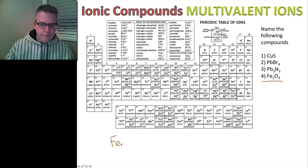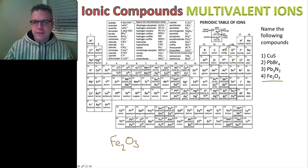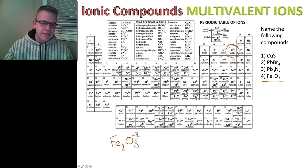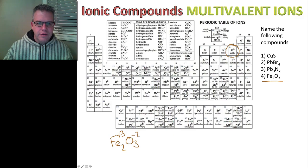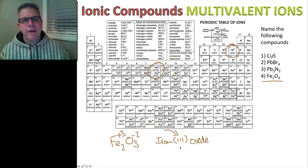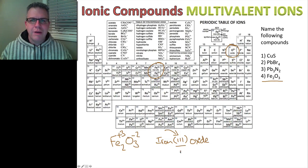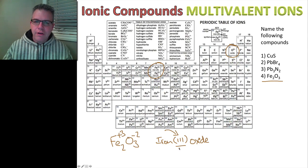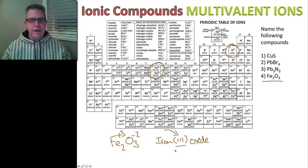Let's do our last example: Fe₂O₃. Oxide has a charge of negative two, so we have a total negative charge of six on that side. That means the cation side must have a total positive charge of six. So iron must have a charge of positive three — it's right here on the periodic table. So we have iron(III) oxide. With multivalent ions, we always name it with the Roman numeral in brackets. This is a little bit more difficult than when we have non-multivalent ions.